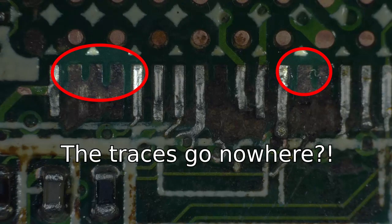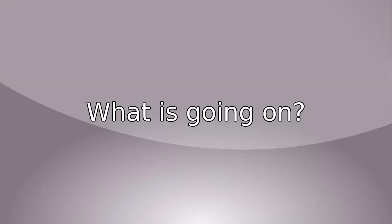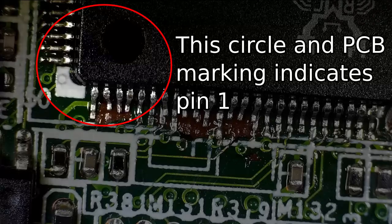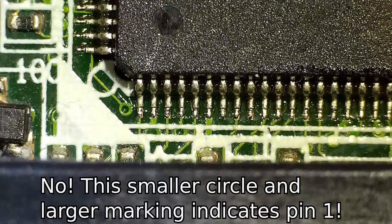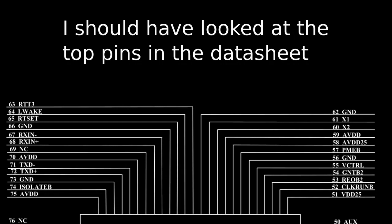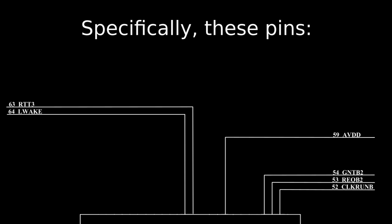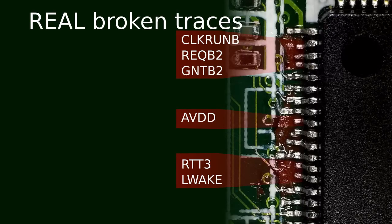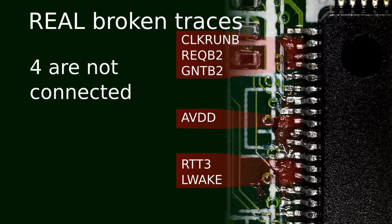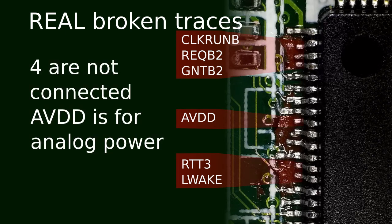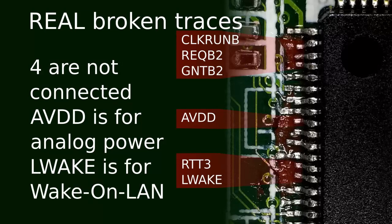Wait — they go nowhere? I'm confused. The circle on the chip and the silkscreen shape indicates pin 1. No — the smaller circle and larger marking does. I should have looked at the top pins in the datasheet, the 6 pins specifically. Here's my corrected diagram from before: 4 traces are not connected. AVDD is for analog power and Lwake is for wake on LAN.